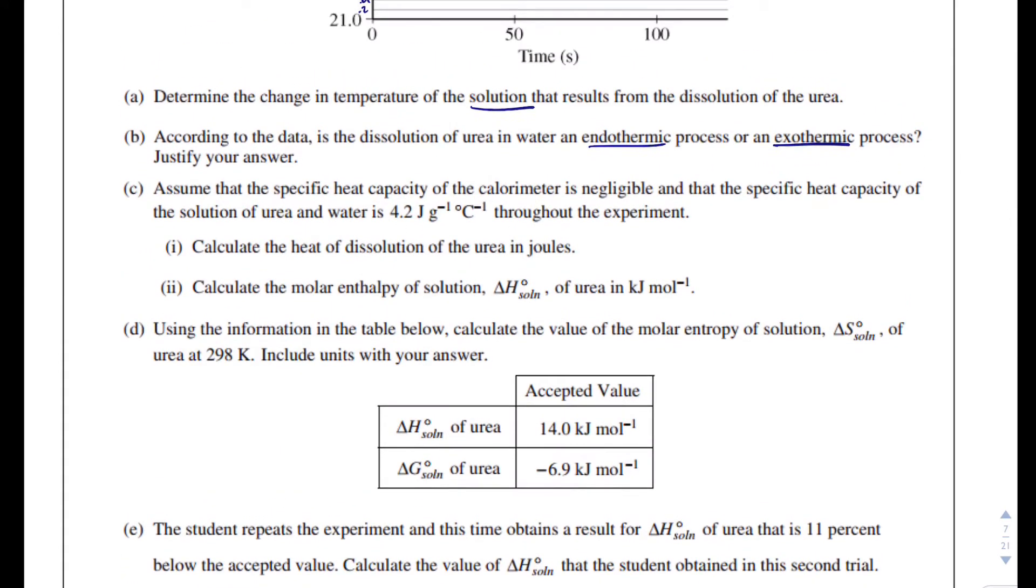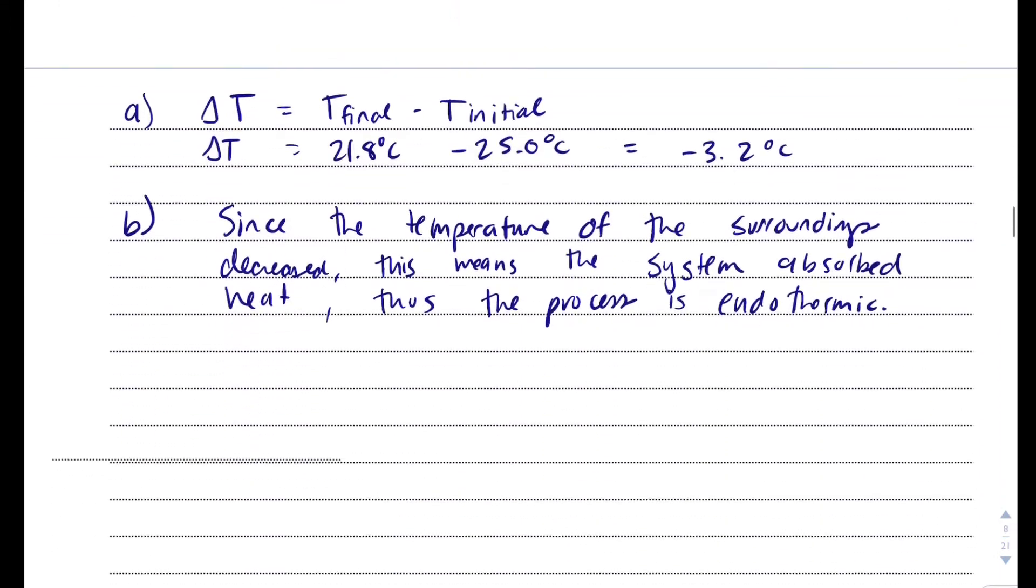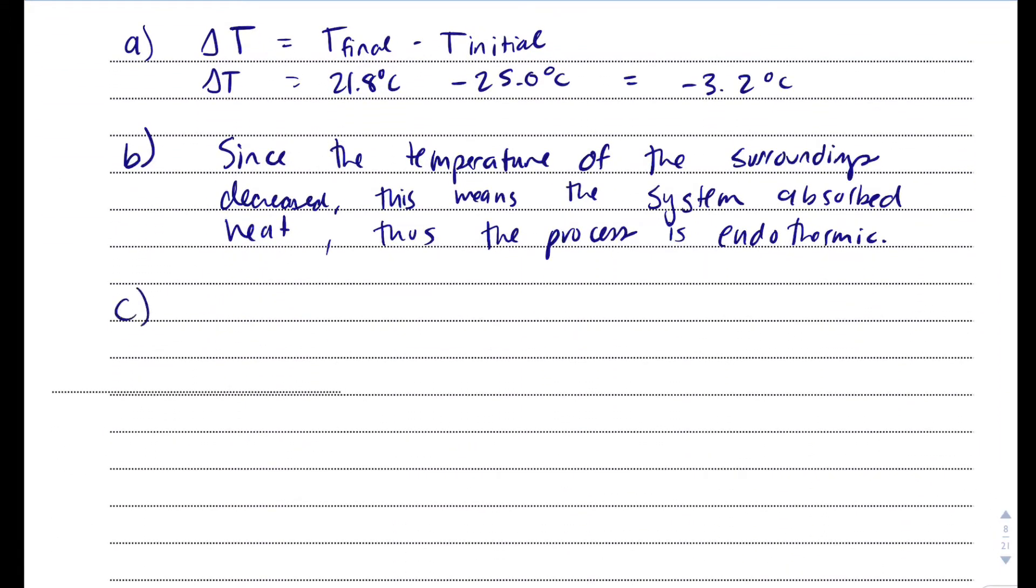In Part C, it says assume the specific heat capacity of the calorimeter is negligible, and that the specific heat capacity of the solution of urea is 4.2 joules per gram degree Celsius. Calculate the heat of dissolution of urea in joules. To me, this looks like a Q equals MC delta T question. A couple things we've got to be careful of, though, because we made a solution. We'll do Q equals MC delta T. We're solving for Q, which is joules. Our mass I'll come and talk about in just a second, but we have 4.2 joules per gram degree Celsius.